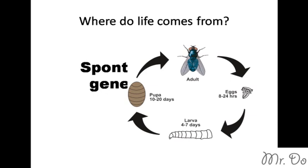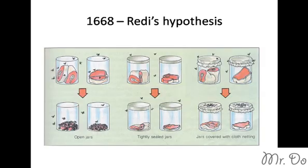So in 1668, a scientist named Redi tried to disprove that hypothesis. The observation was: where do these flies come from? In his experiment, what he did was he had two jars — one jar with meat left open, and the other jar with meat but closed off.